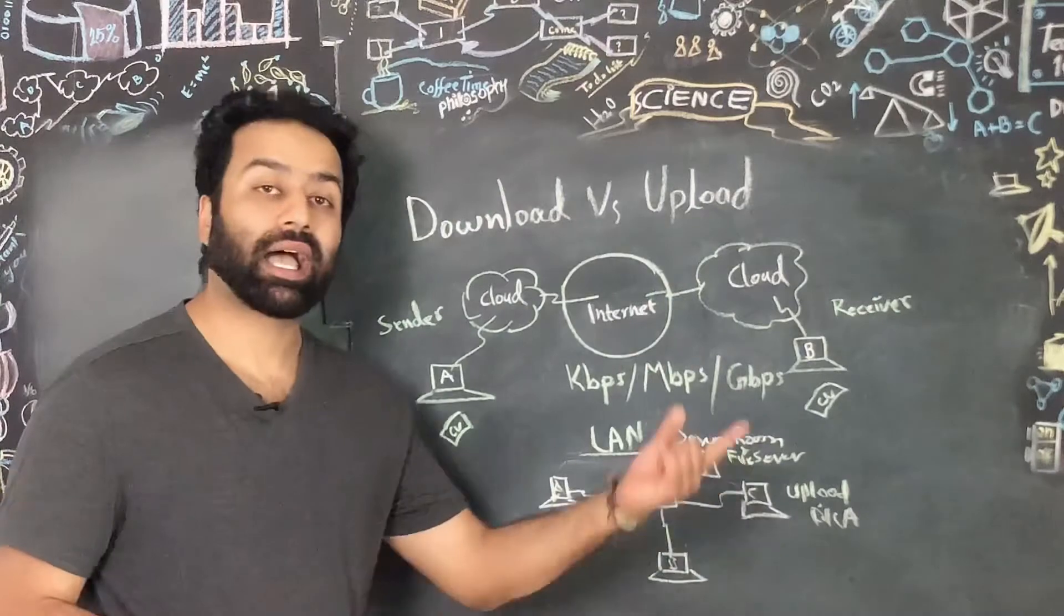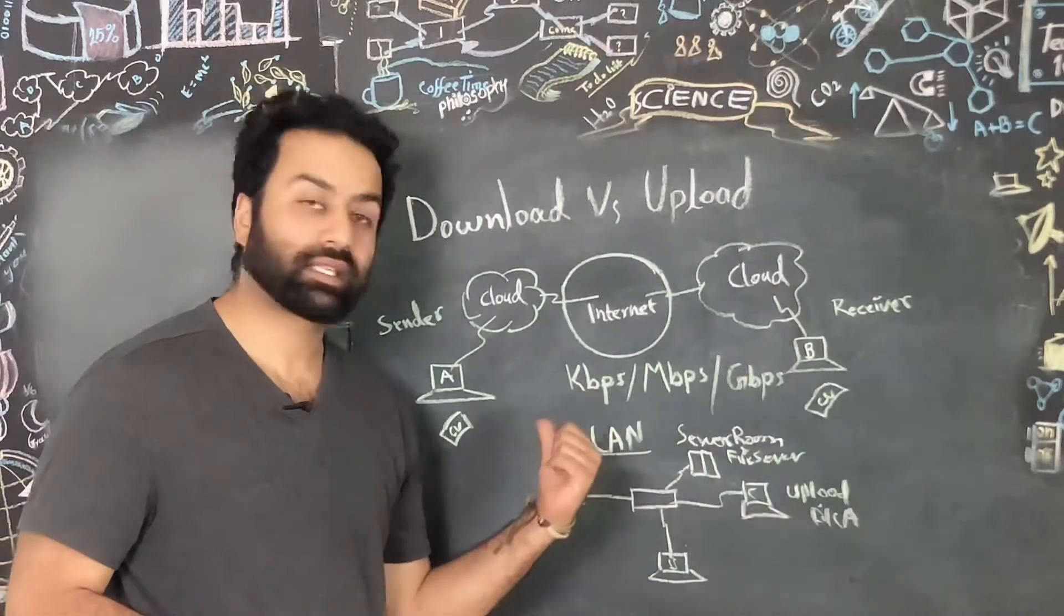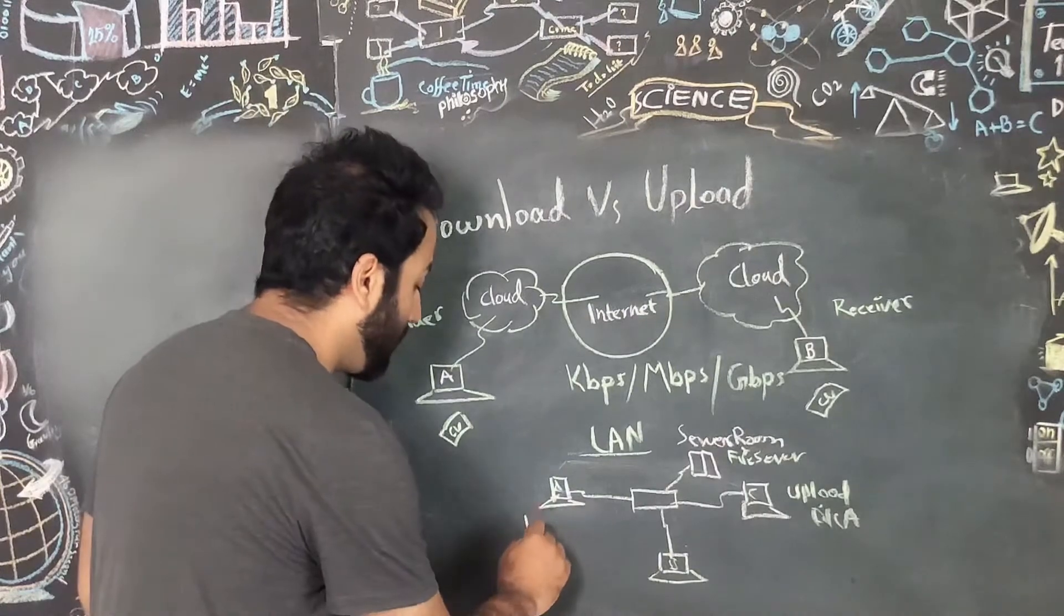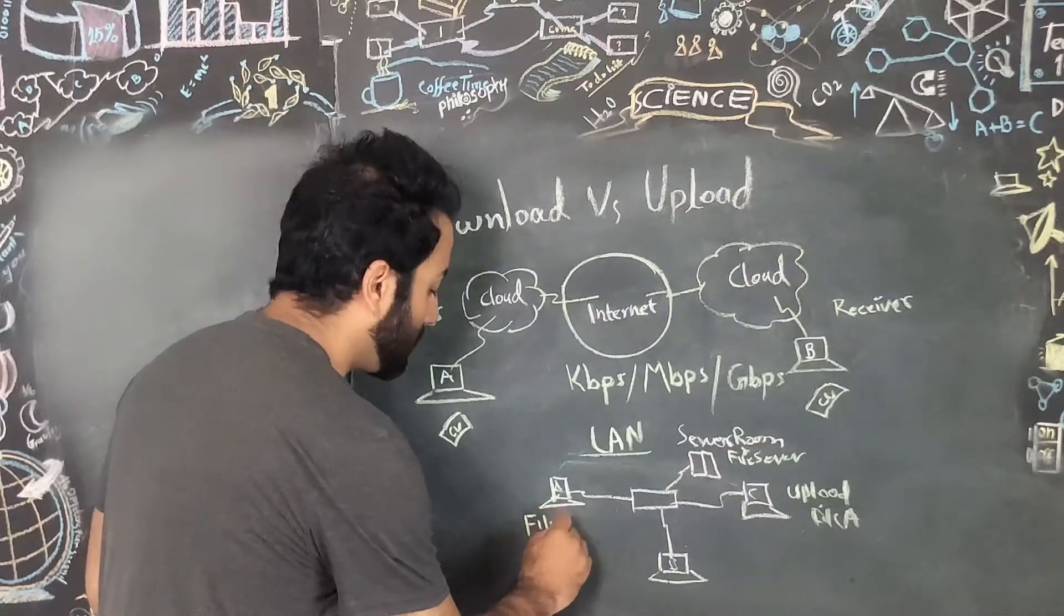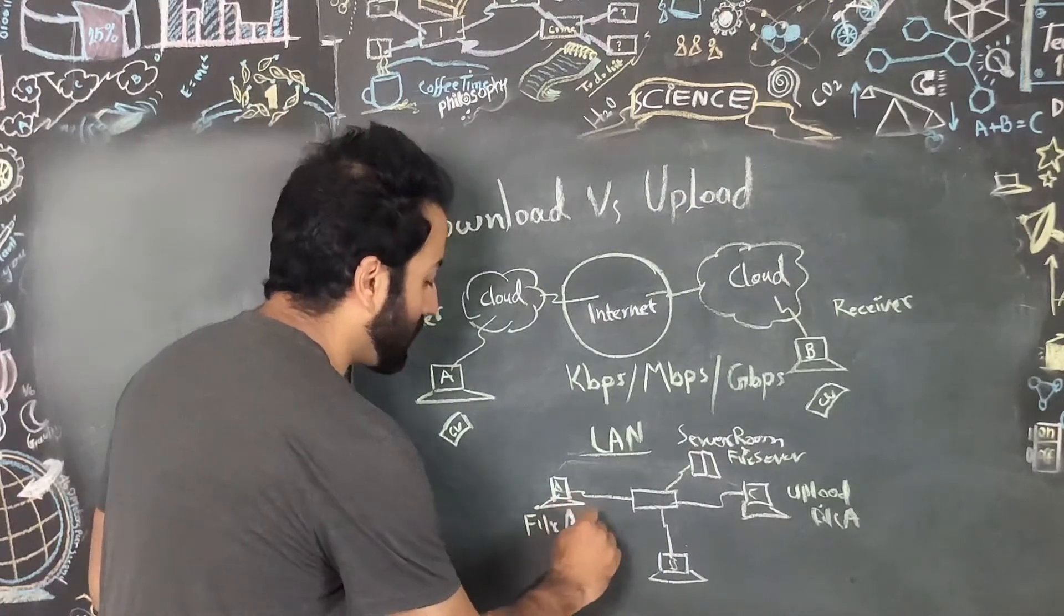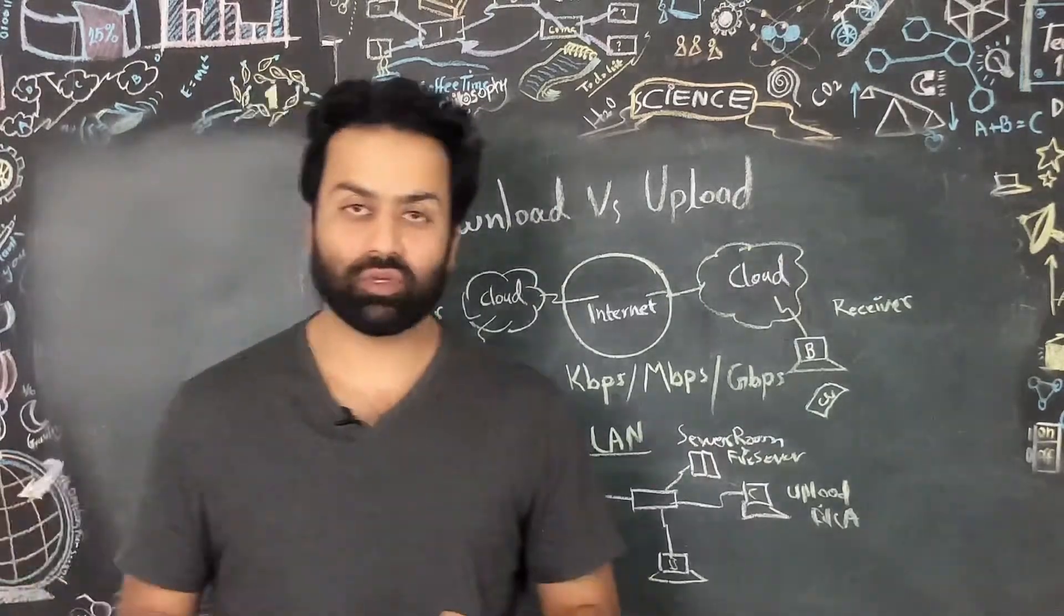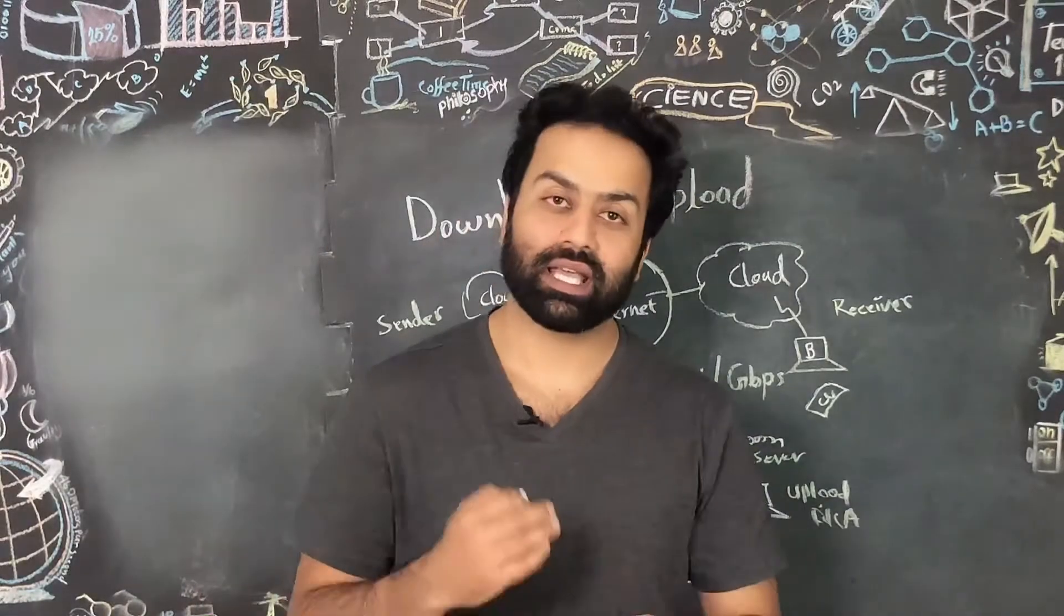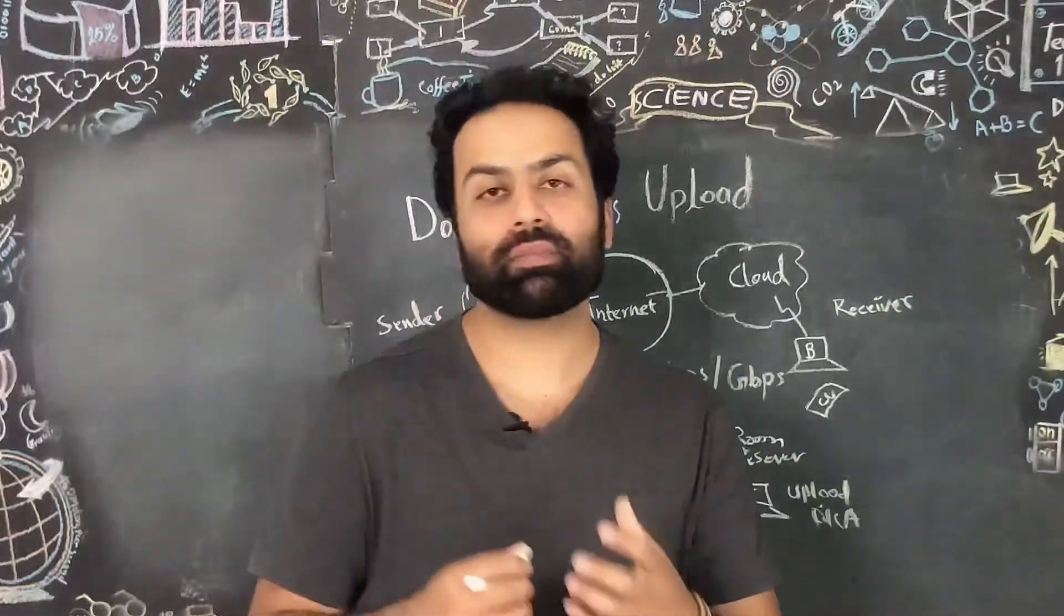Now computer A wants to access the same file and they want to download it. So if computer A accesses file A or downloads file A, this is called downloading. See, in here in the local area network we have uploading and downloading as well.